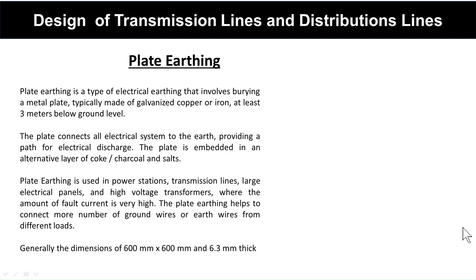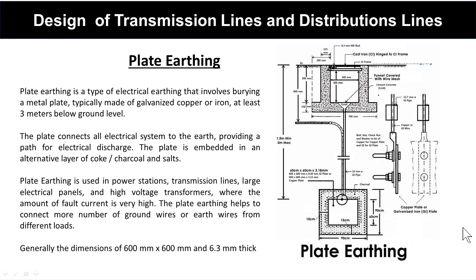Pallet earthing involves burying a metal pallet, typically made of galvanized copper or iron, at least 3 meters below ground level. The pallet connects all the electrical systems to the earth, providing a path for electrical discharge, and is embedded in alternating layers of charcoal or coke and salt. Pallet earthing is used in power stations, transmission lines, large electrical panels, and high-voltage transformers where fault current is very high. Generally, a pallet of dimensions 600 mm × 600 mm and 6.3 mm thick is used.